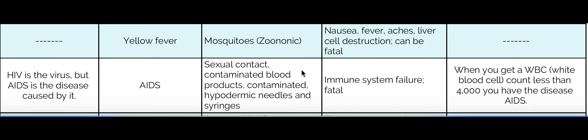AZT causes vomiting, hallucinations, and some people can't walk — they get very dizzy. Some people take it very well; some do not. There are probably a whole host of newer medications they give HIV positive patients now. Antiviral medications slow the reproduction of the virus so it can't replicate as fast as it normally does. Anything like Theraflu or Tamiflu that you would take for influenza is an antiviral, and AZT is as well.